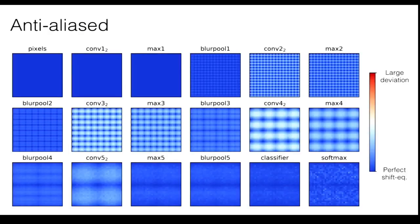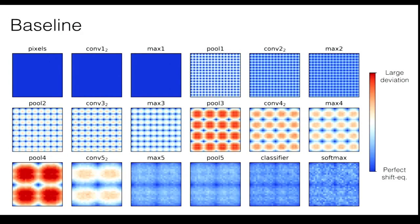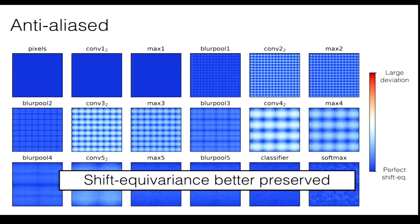I can show this for the CIFAR VGG test case as well. This is after we do anti-aliasing. Before versus after — and you can see that shift equivariance has been much better preserved.